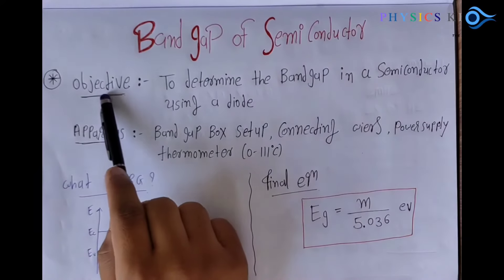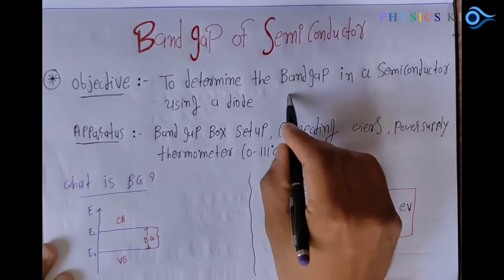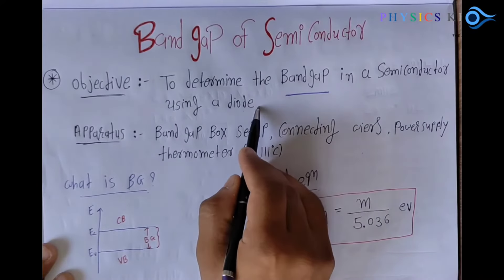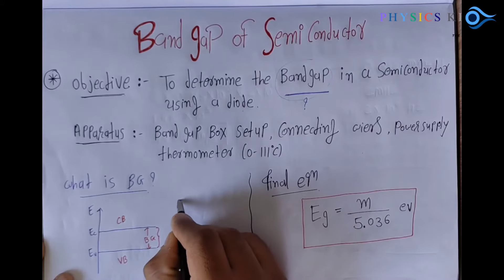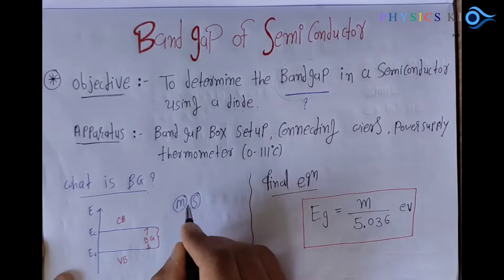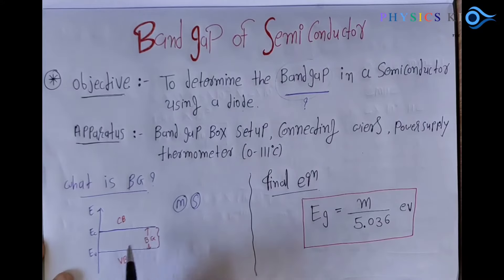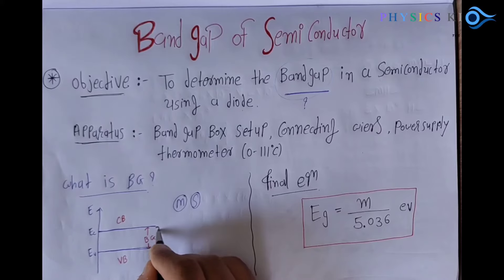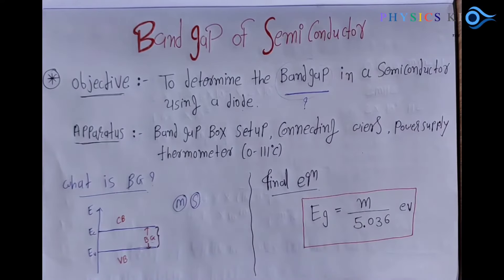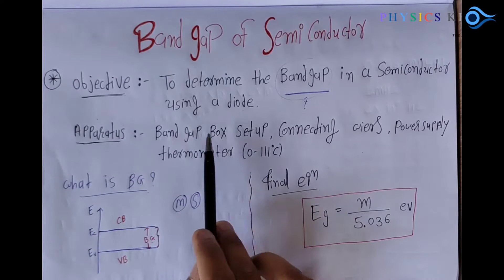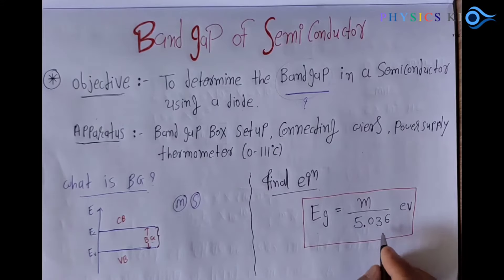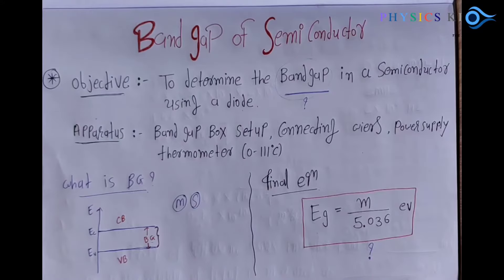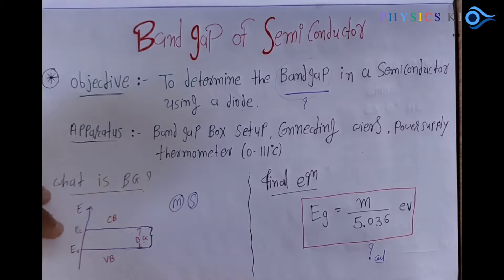The title of this experiment is 'Band Gap of Semiconductor.' Our objective is to determine the band gap in a semiconductor diode. What is band gap? In every semiconductor material, there are energy levels — the conduction band energy level and the valence band energy level. The gap between those two is considered the band gap. The key equation is Eg, which represents the energy gap.